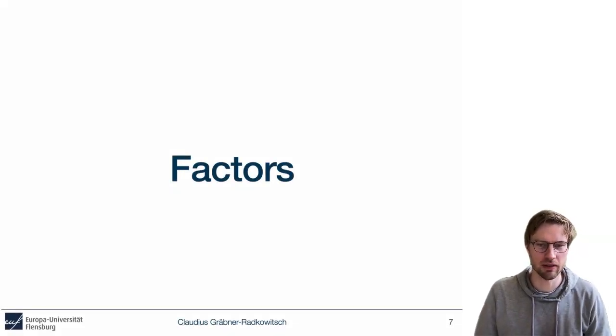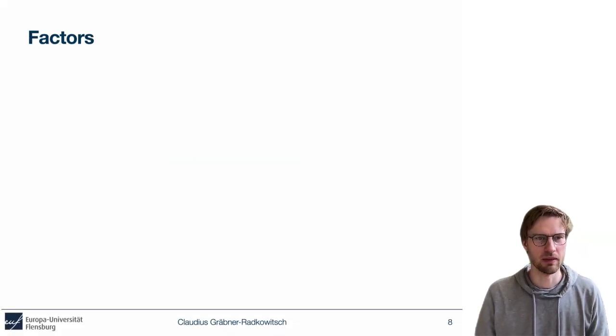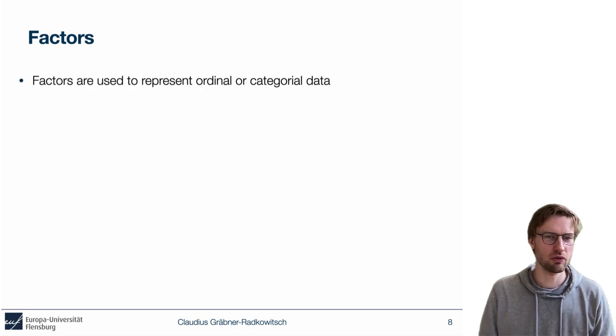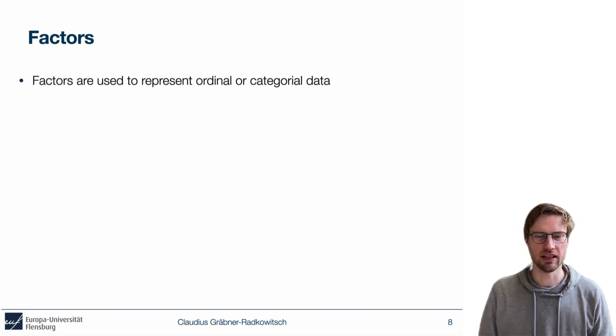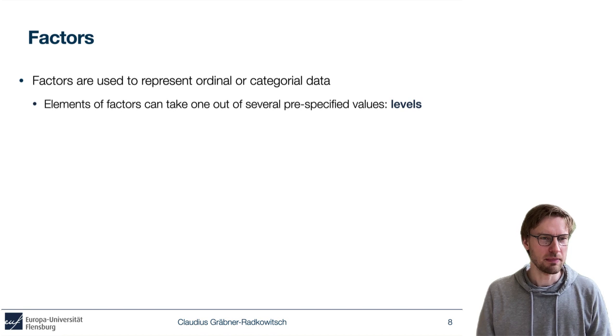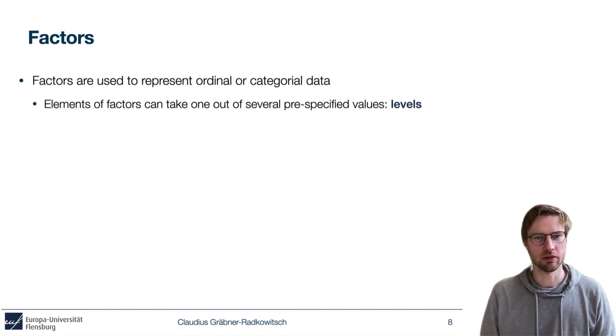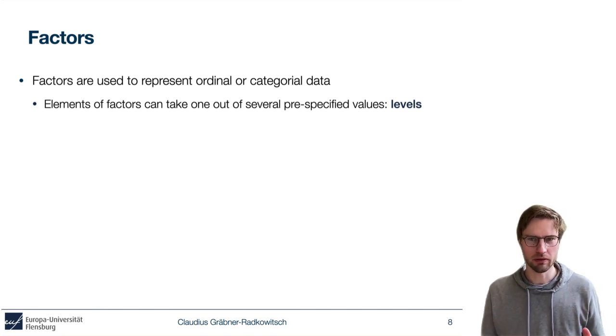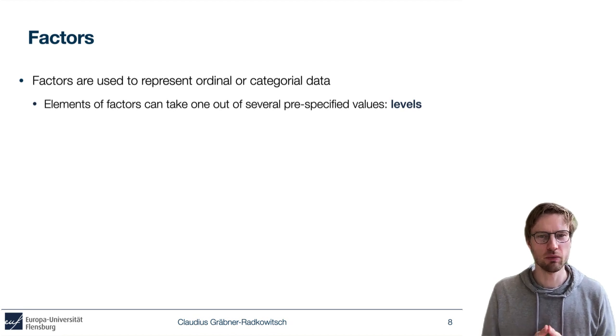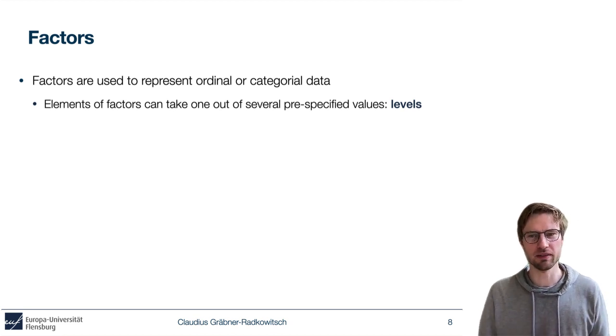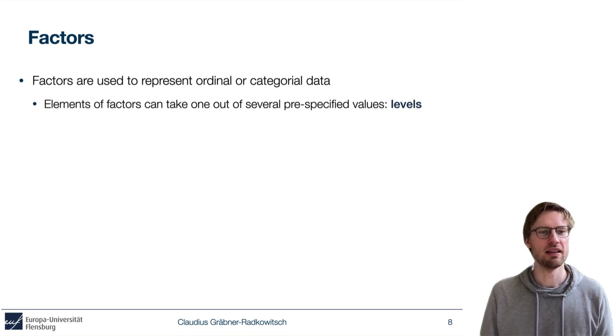Let's talk about our first advanced object type: factors. Factors are used to represent ordinal or categorical data. That means the elements of a factor cannot take any arbitrary value, but can only take one out of several pre-specified values, and these pre-specified values we call levels.